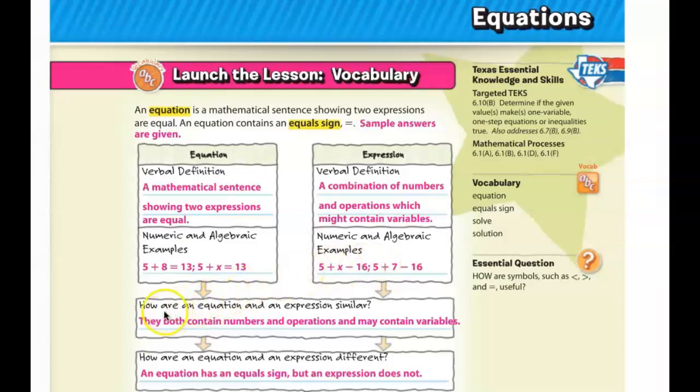So you notice in these two examples, there are no equal signs. So how are equations and expressions similar? They both can contain numbers and operations and sometimes variables. How are they different? An equation has an equal sign, but an expression does not.